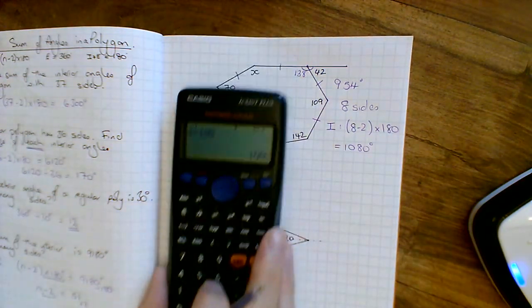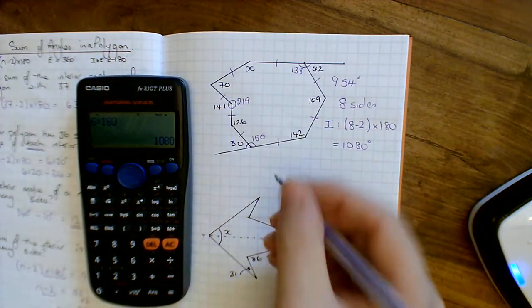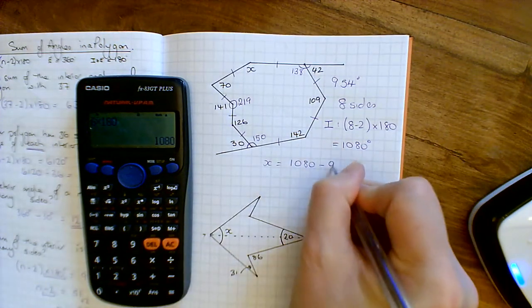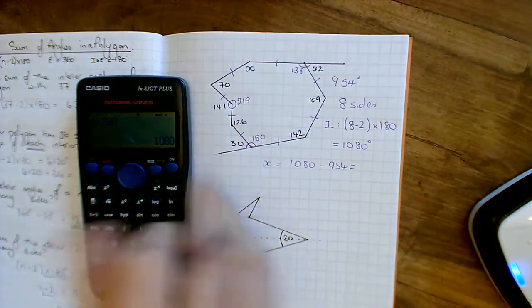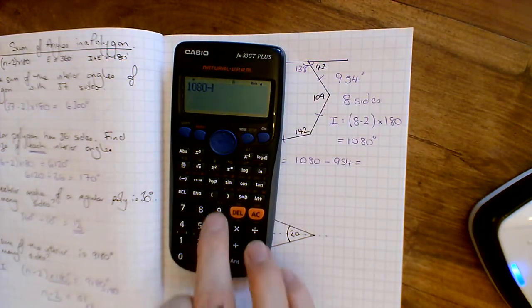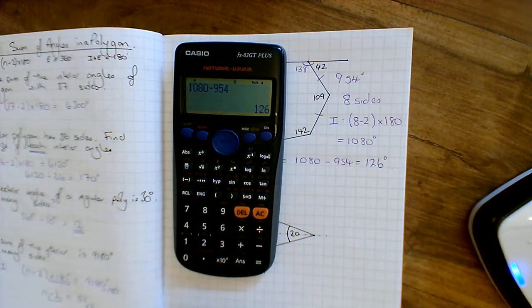Right, now, so I know that's what they should add up to, and I know that's what I've got so far. So x must equal what they should add up to take away what I've got so far, which equals, so 1080 take away 954 is 126 degrees. And that's the end of that question.